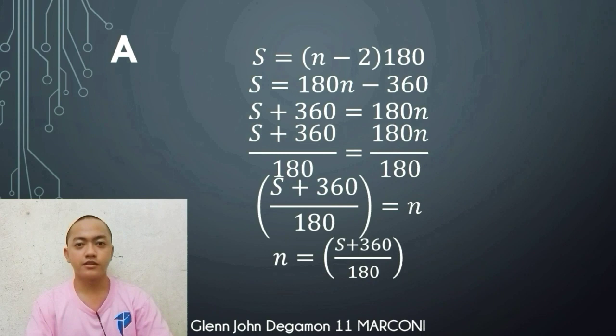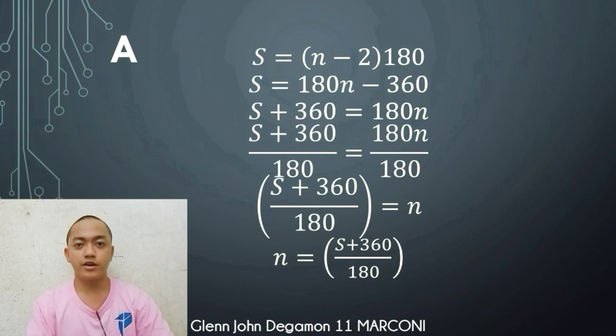The formula that gives the total measurement of the interior angles of a polygon with n sides is s equals (n minus 2) times 180. To solve for n in terms of s, distribute 180: s equals 180n minus 360. Transpose negative 360: s plus 360 equals 180n. Divide both sides by 180 to isolate n: n equals s plus 360 all over 180. This is the answer for letter a.